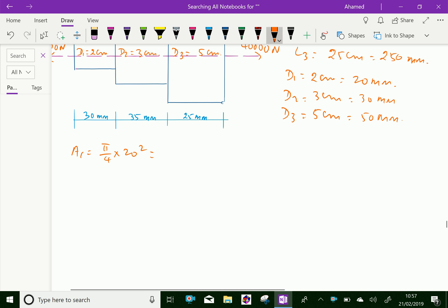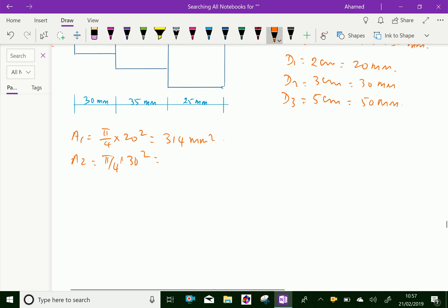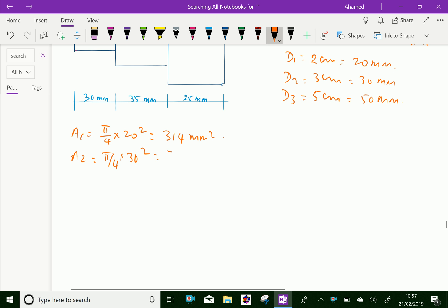A2 equal pi by 4 into 30 square divided by 4, equal 706.5 mm square.